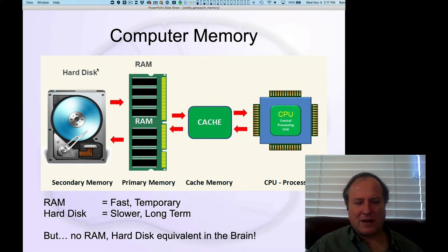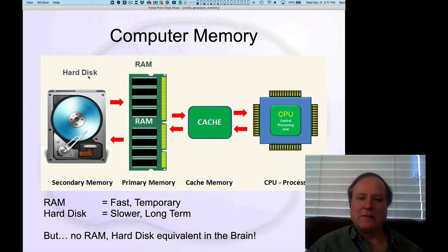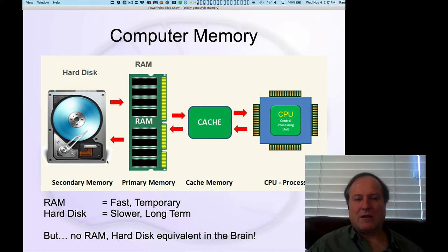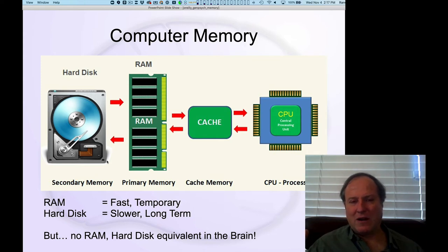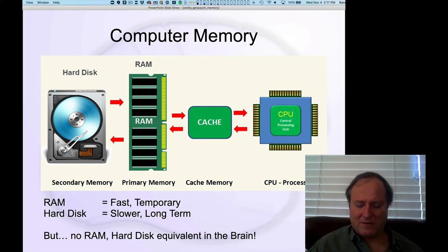If you took this analogy literally, you'd say the hippocampus is kind of like a hard disk. And maybe you could make that case metaphorically, but it's made of the same neurons that are everywhere else in the brain, and all these synapses are everywhere in the brain. So what is it really that's going on here?